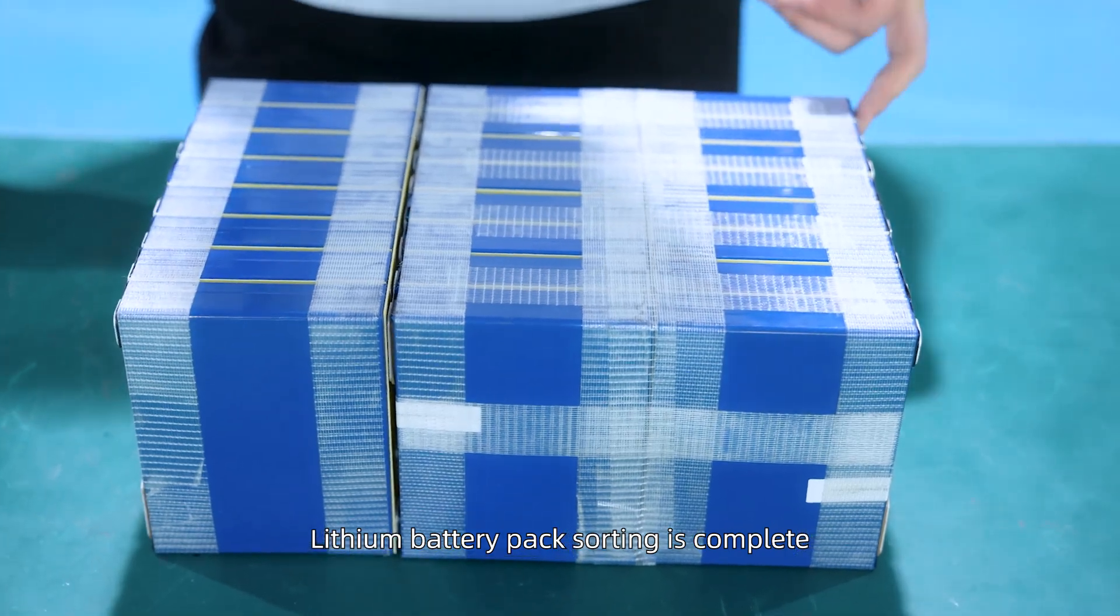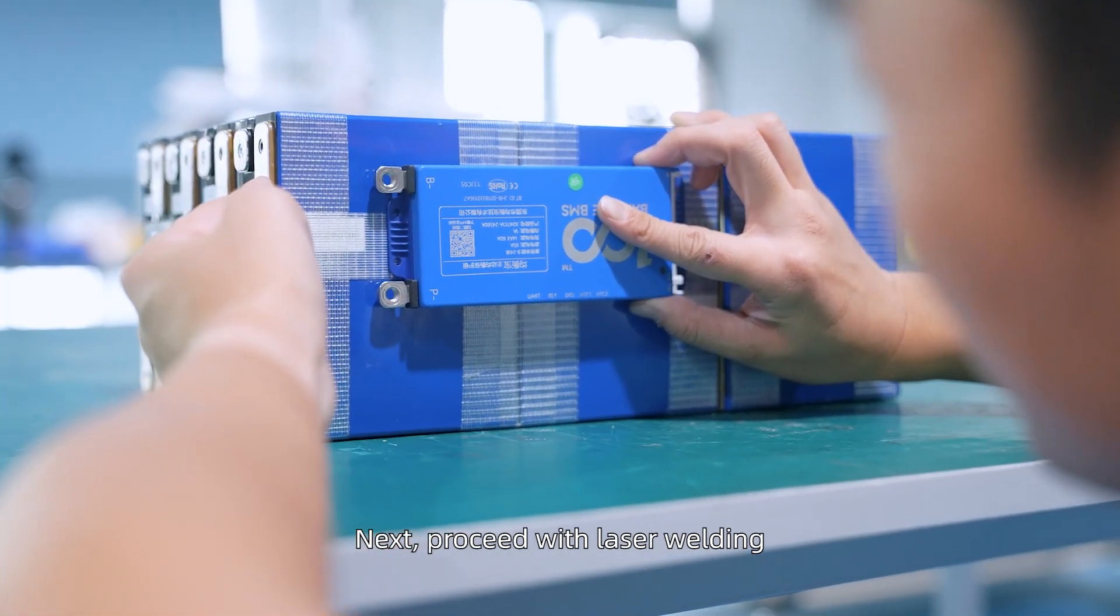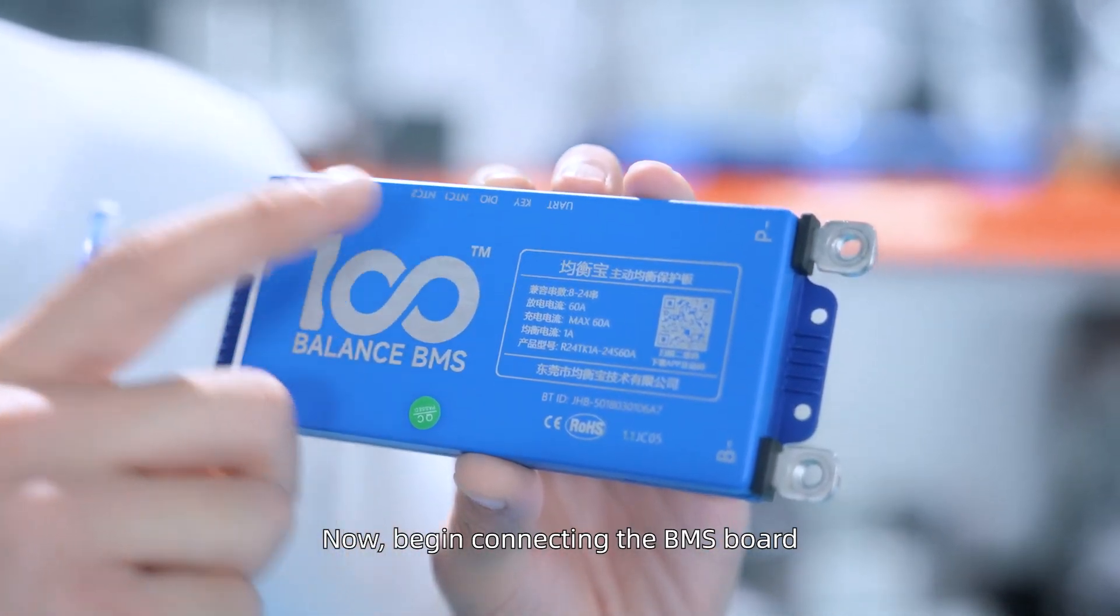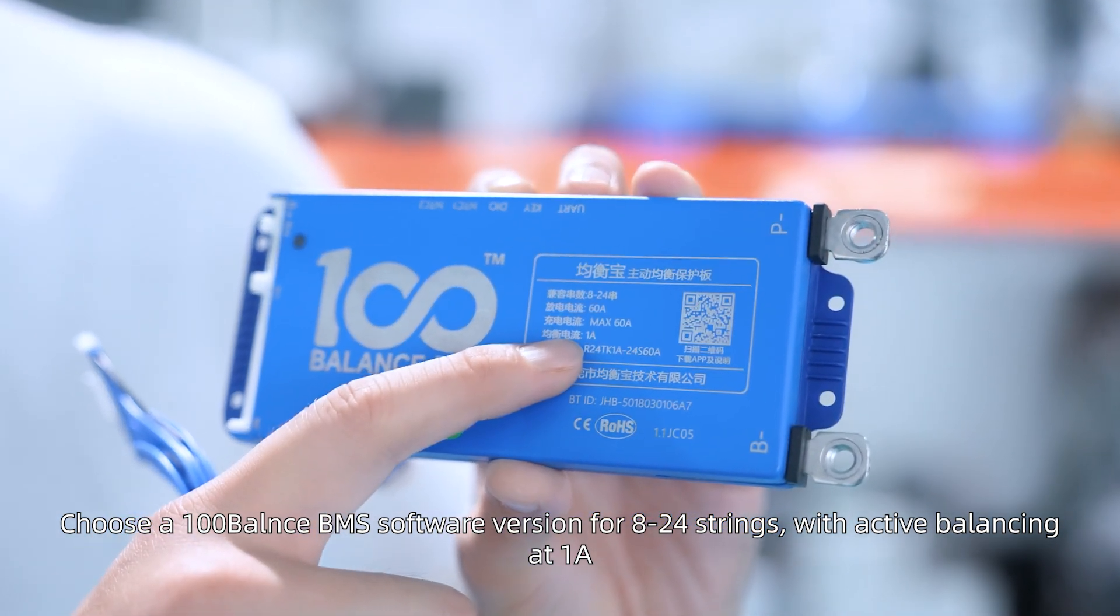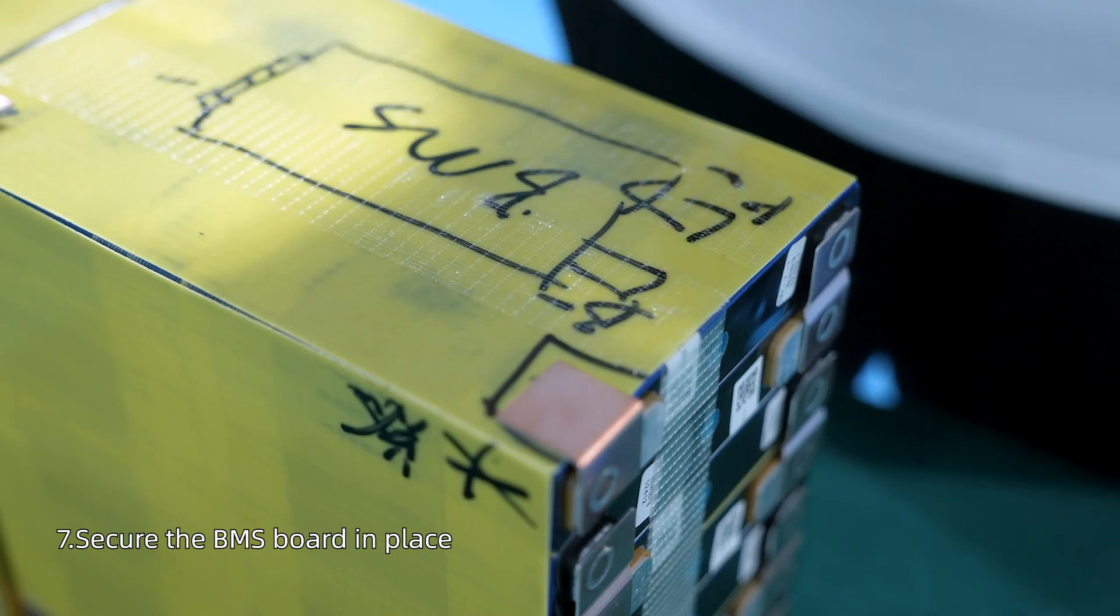Lithium battery pack stacking is complete. Plan the BMS board placement. Next, proceed with laser welding. Laser welding of lithium battery is done. Now begin connecting the BMS board. Choose the 100 balance BMS software version for 24 strings with active balancing at 1A. Screw the BMS board in place.